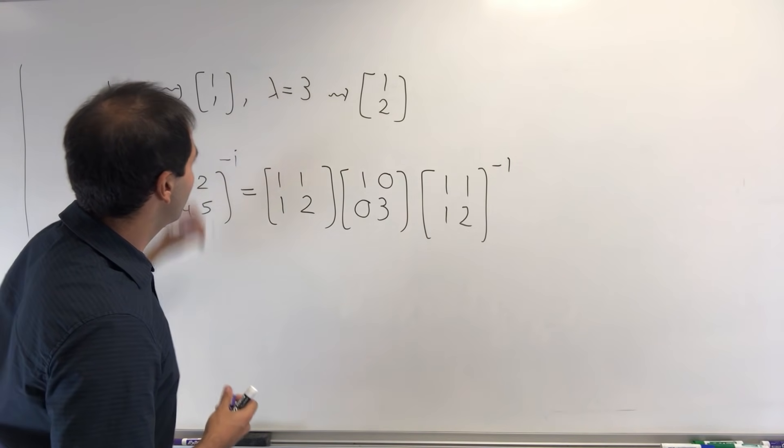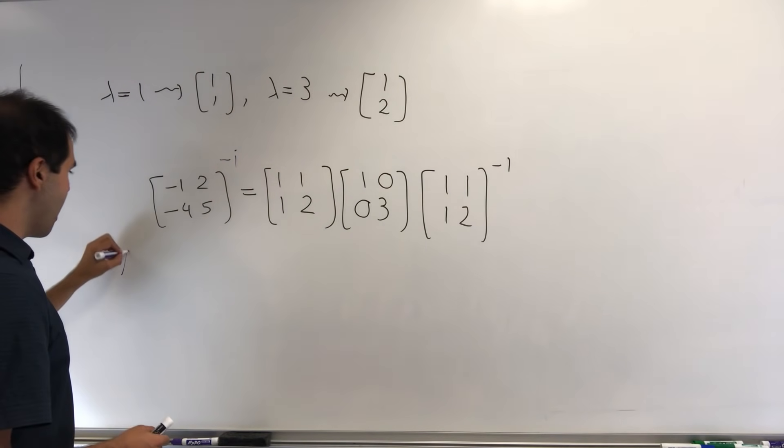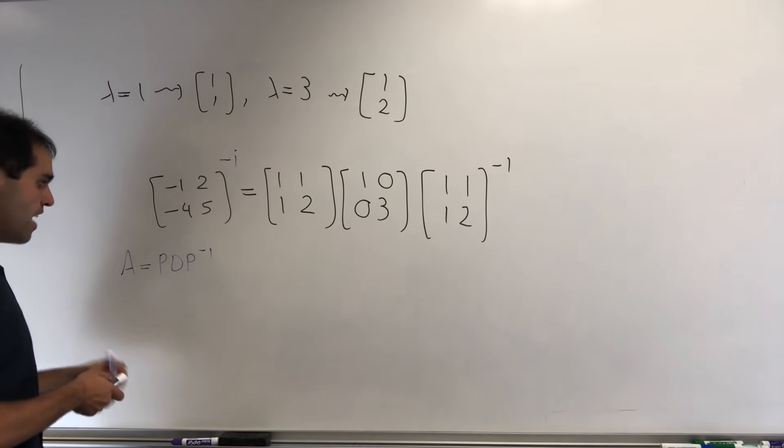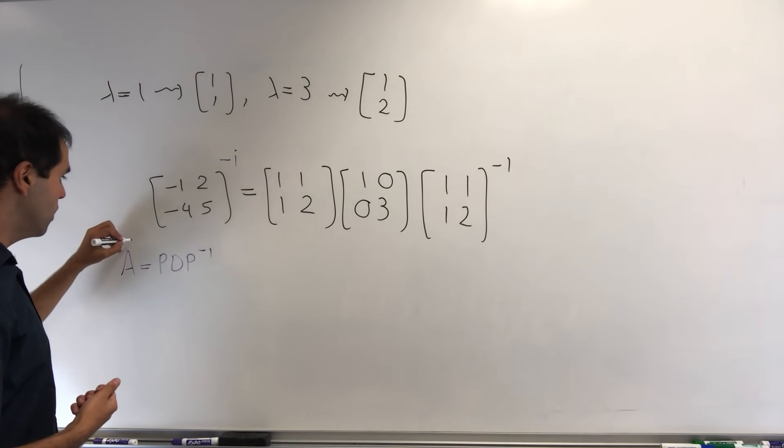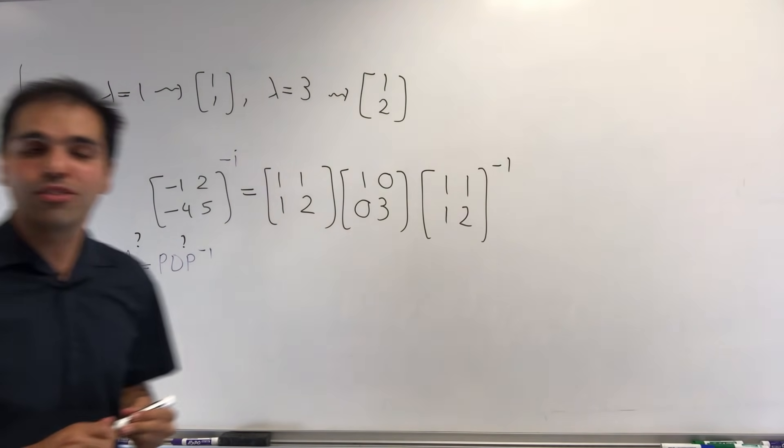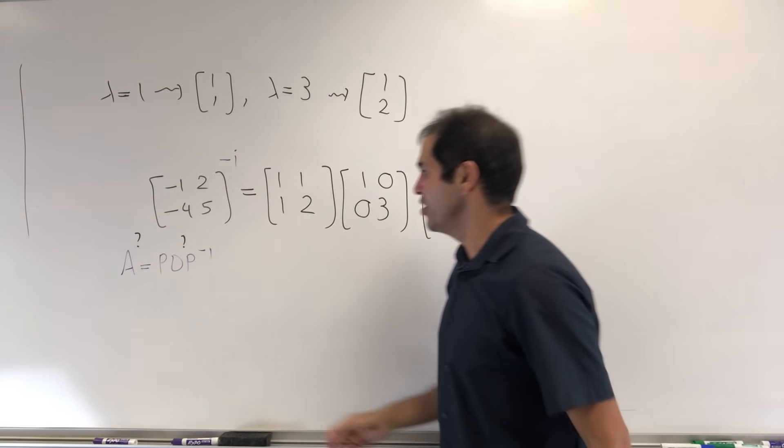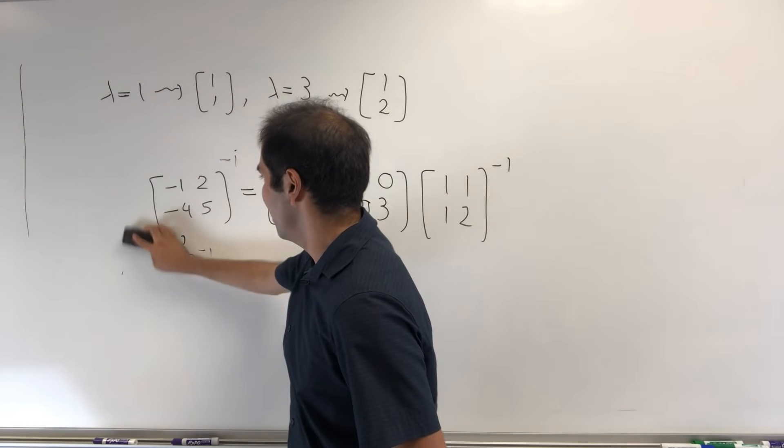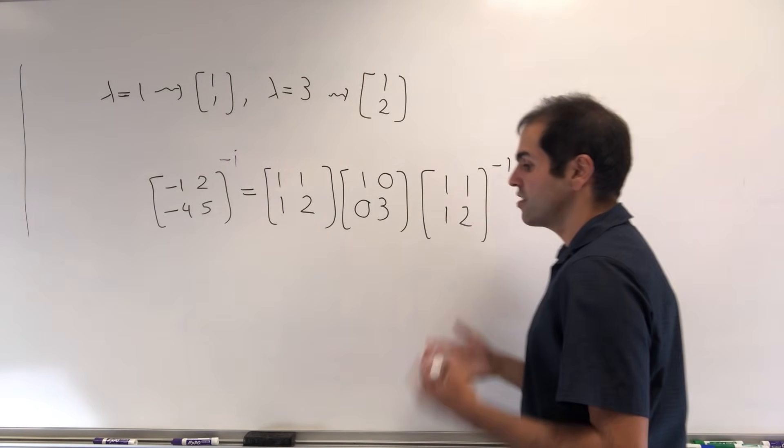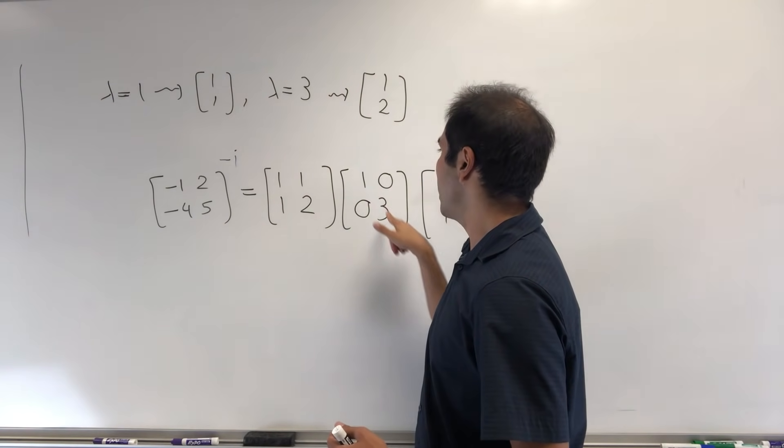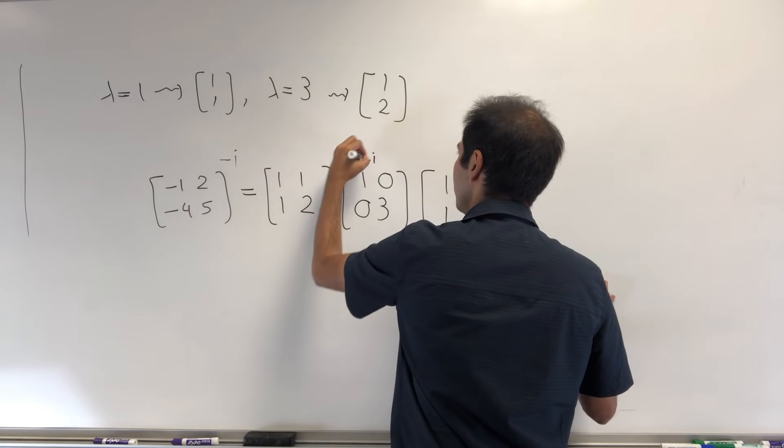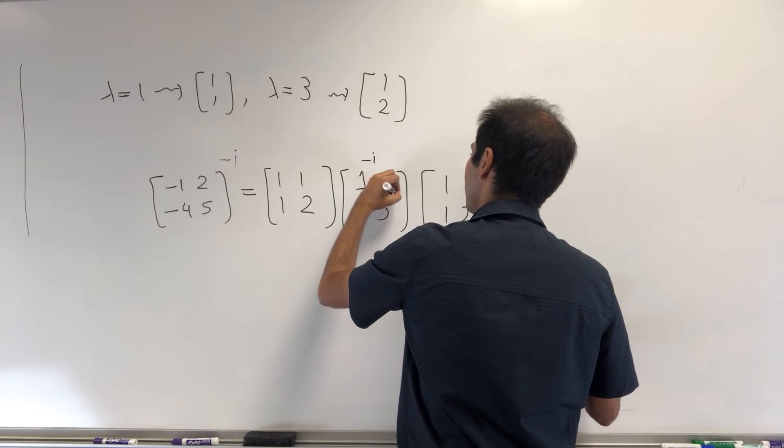And here's the beautiful thing: if you have A = PDP^(-1), then A to any power just becomes PD to that power times P^(-1), just by multiplying out A², A³, A⁴, et cetera. So the minus i-th power of this means all you need to do is to raise the diagonal entries to the minus i-th power. So 1 to the minus i and 3 to the minus i.